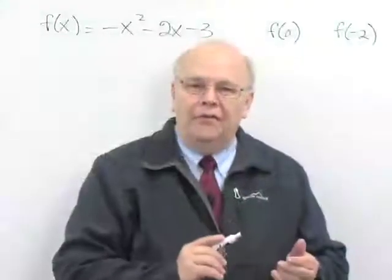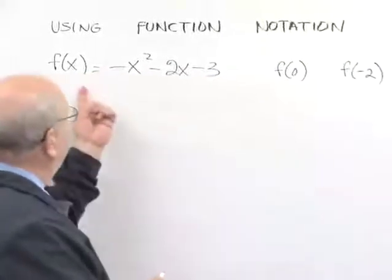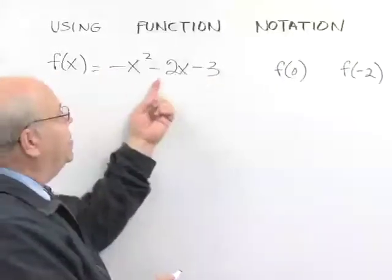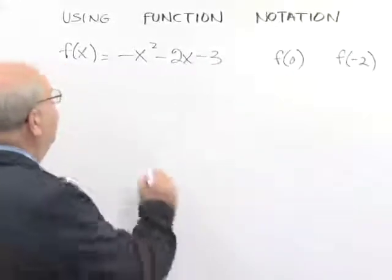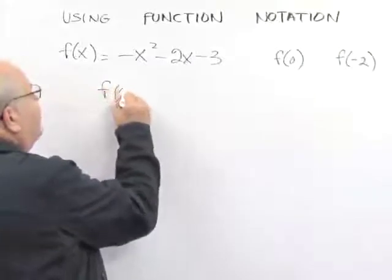Here we have a functional expression, f of x equals minus x squared minus 2x minus 3. For our first problem, we need to evaluate f of 0.